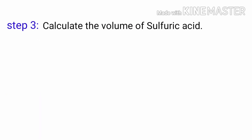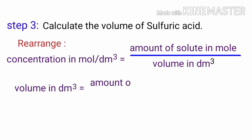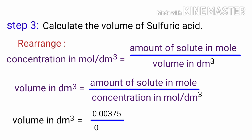Step 3: Calculate the volume of sulfuric acid. Rearranging the formula — concentration (mol/dm³) = amount of solute (mol) ÷ volume (dm³) — gives: volume (dm³) = amount of solute ÷ concentration = 0.00375 ÷ 0.100 = 0.0375 dm³, which equals 37.5 cm³.